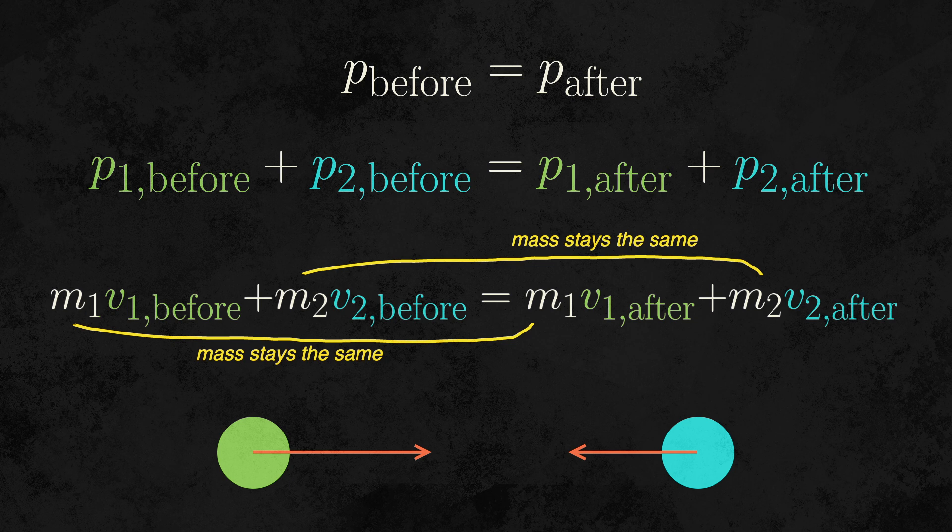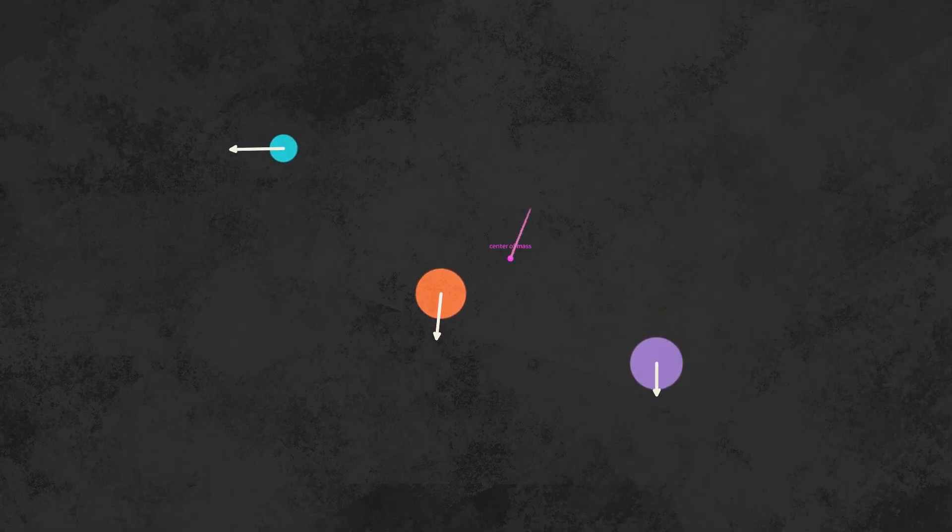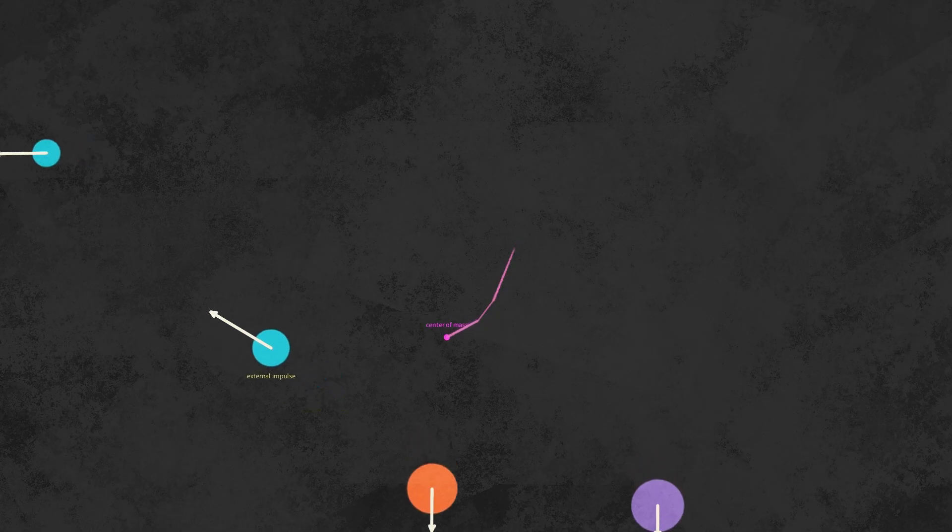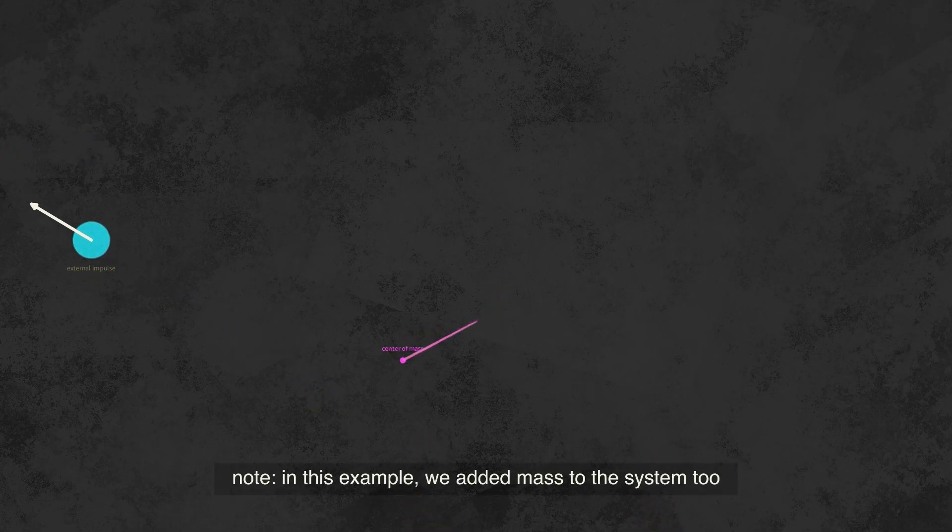We can also connect this idea to the center of mass. In a moving system, the velocity of the center of mass will only change when an external impulse acts on the whole system itself. If the only changes to a system are internal, like a collision, the path of the center of mass won't be affected at all.